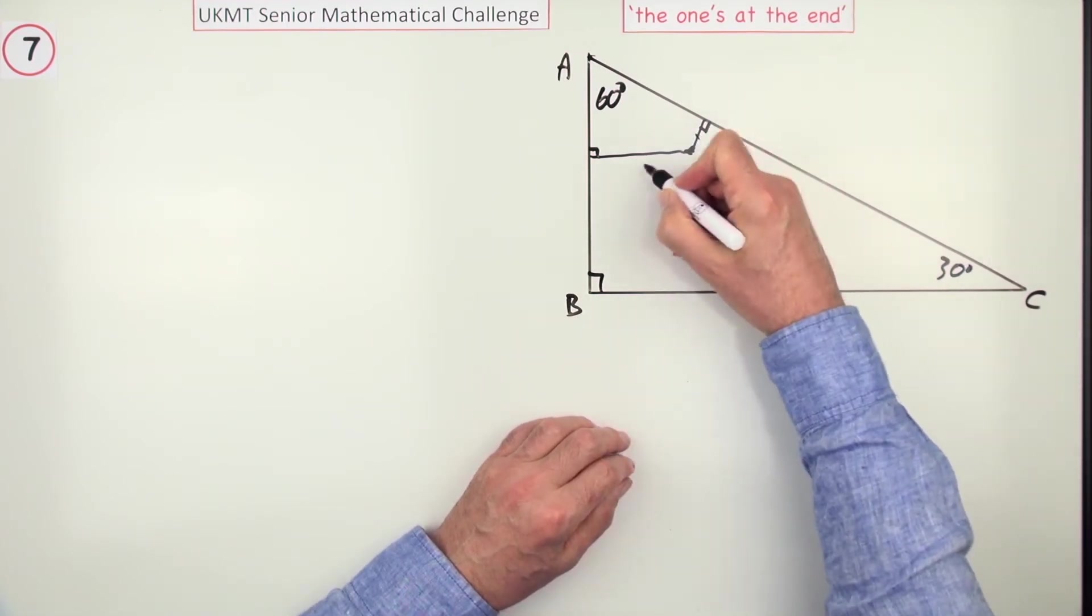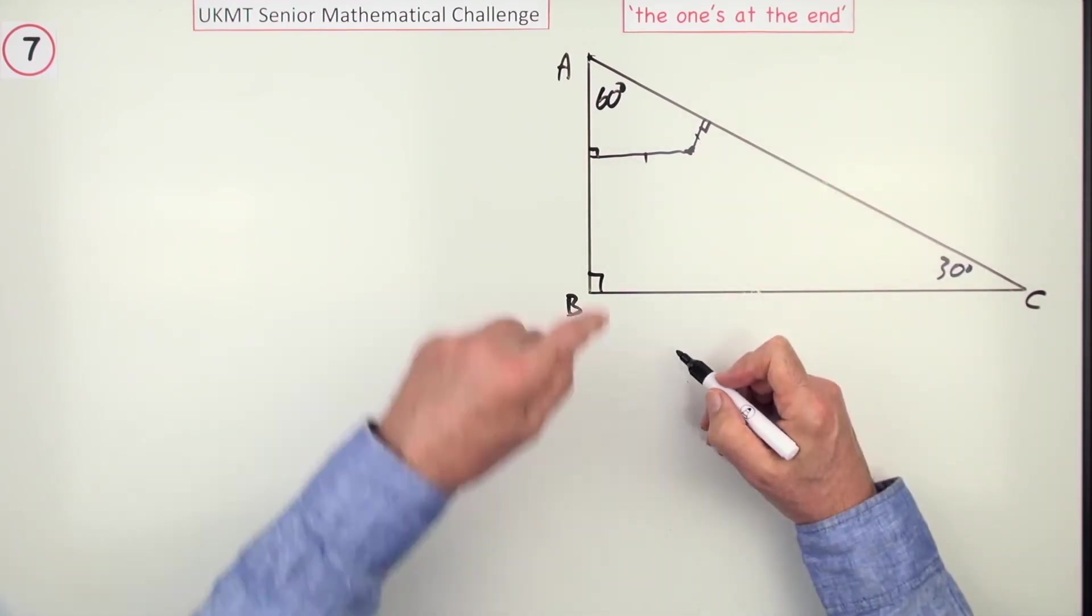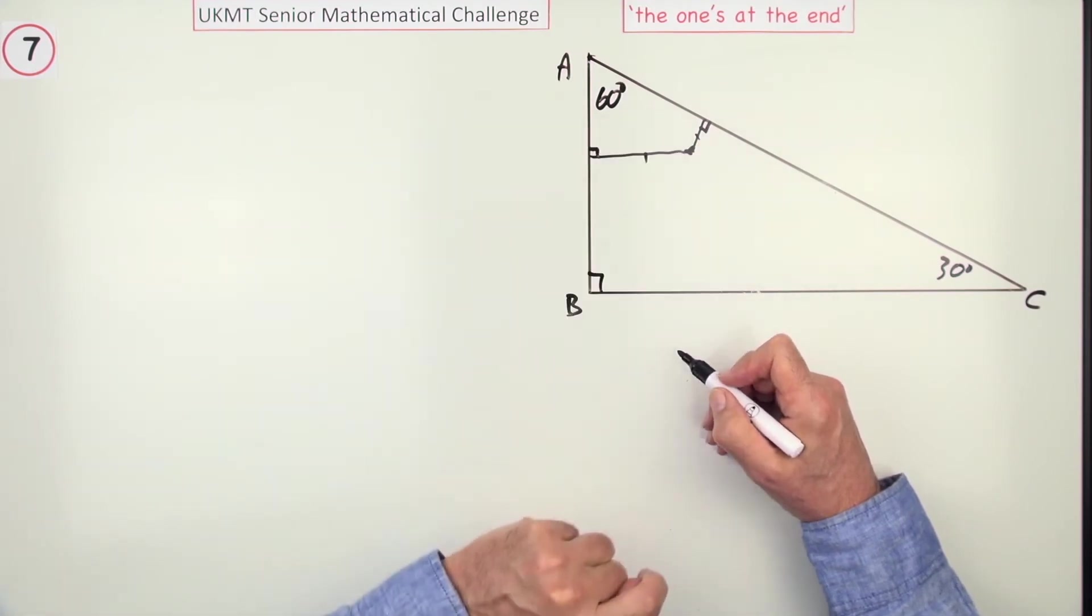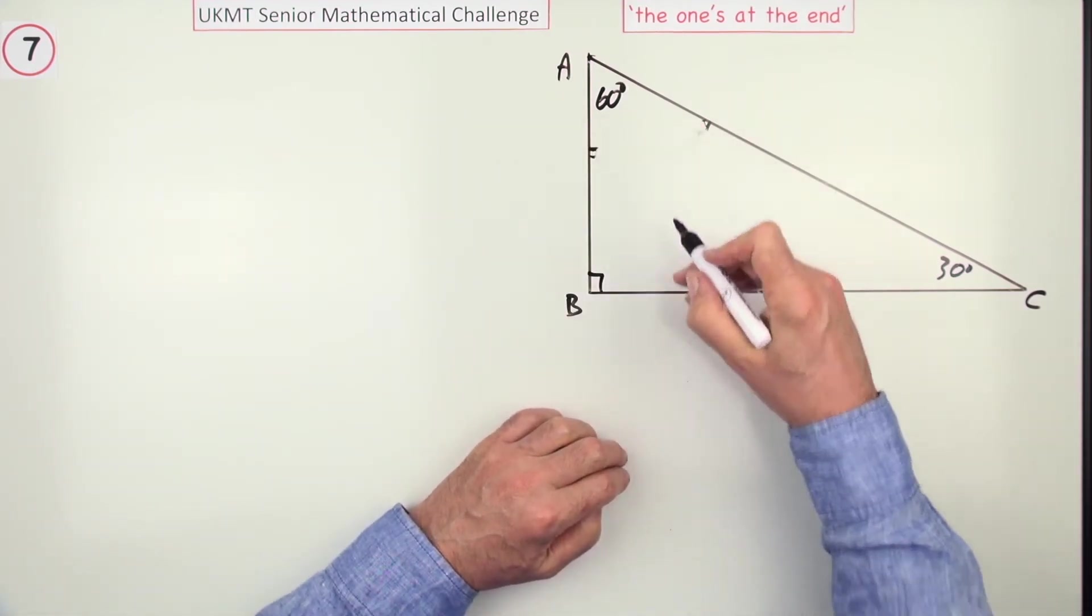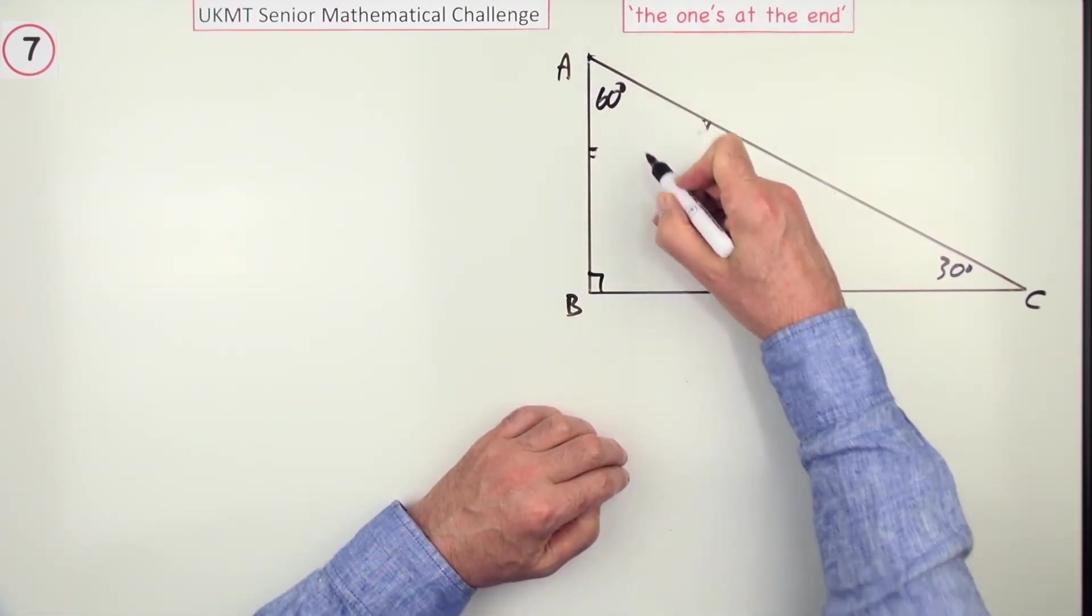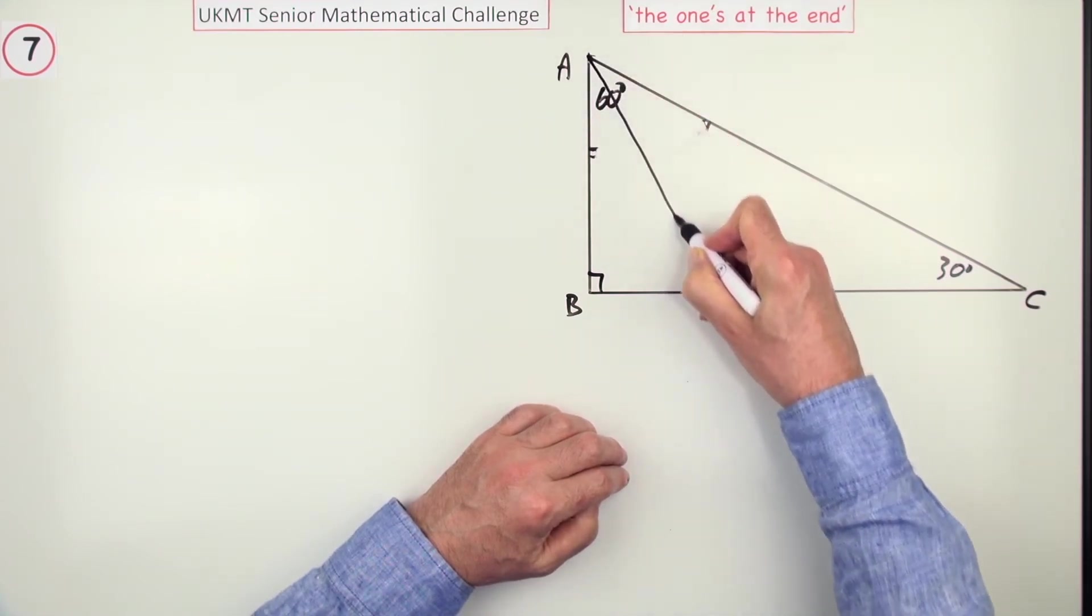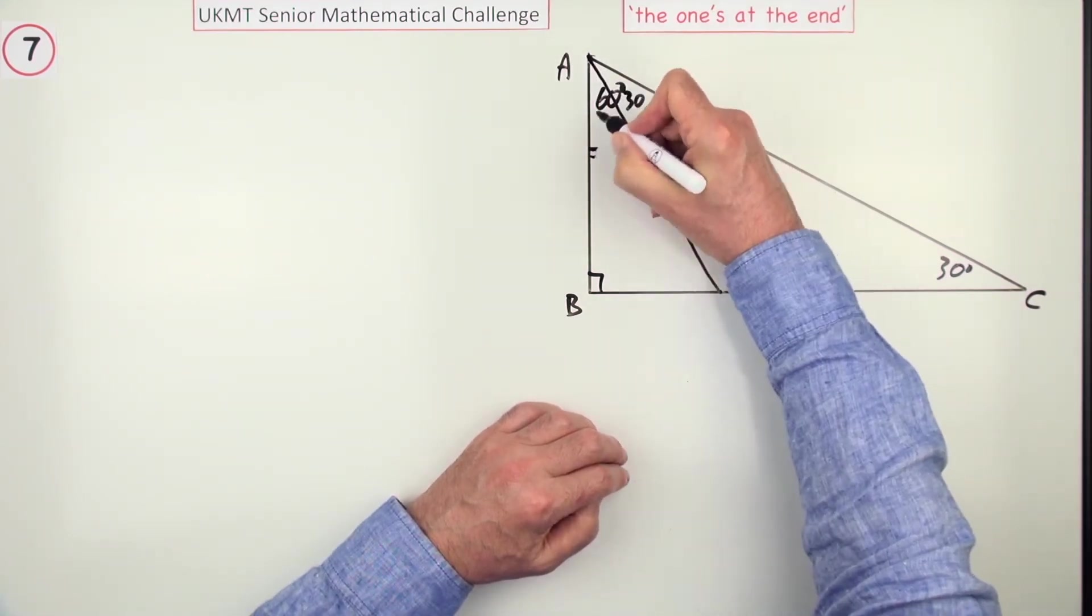Well, to be equidistant, these two parts would have to be the same, so that would form a kite. So, I'll just rub that out, which means there'd have to be an axis of symmetry through here, so I'd have to draw a line at 30 degrees on both sides.